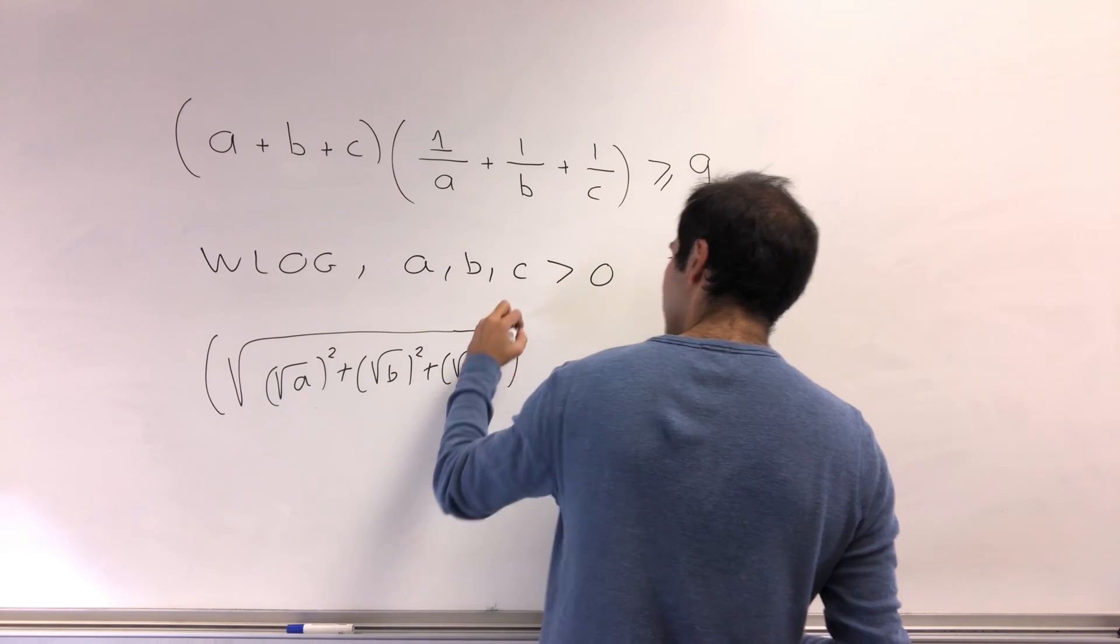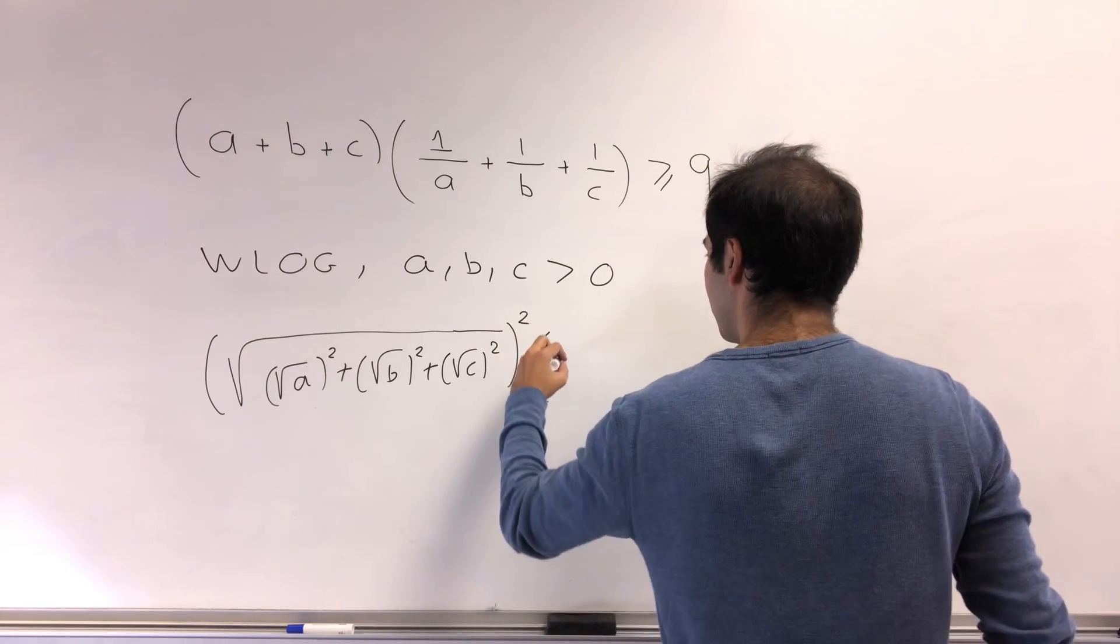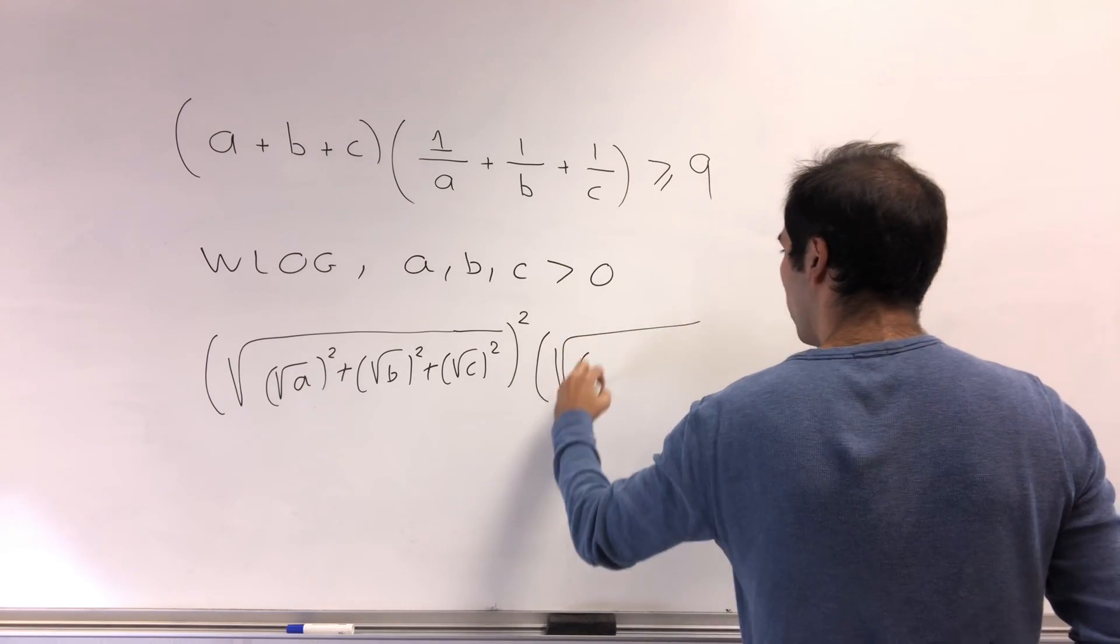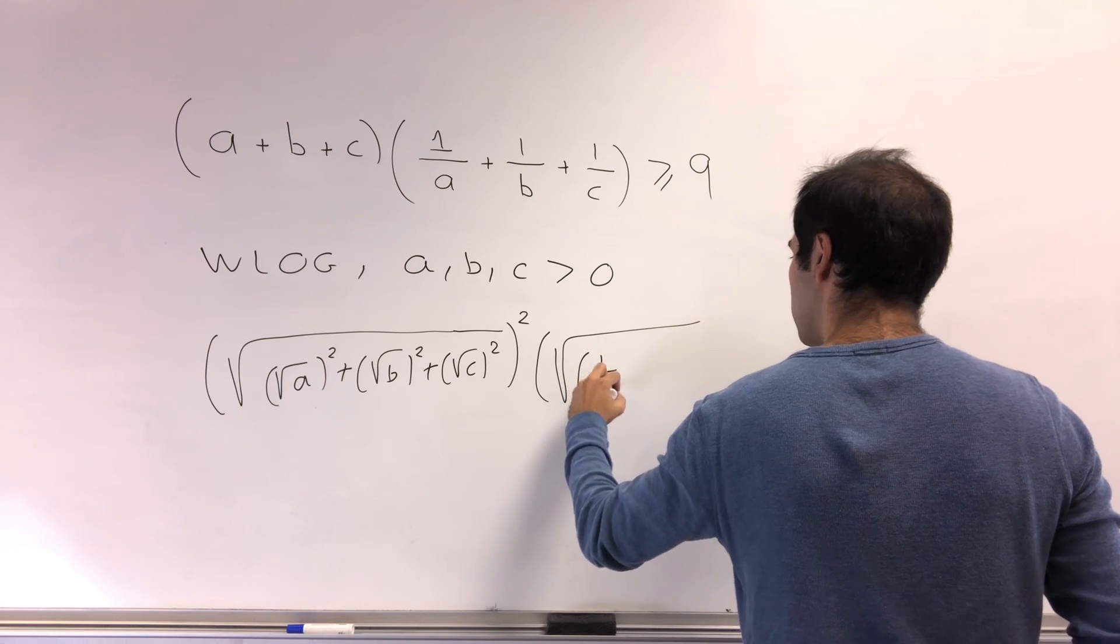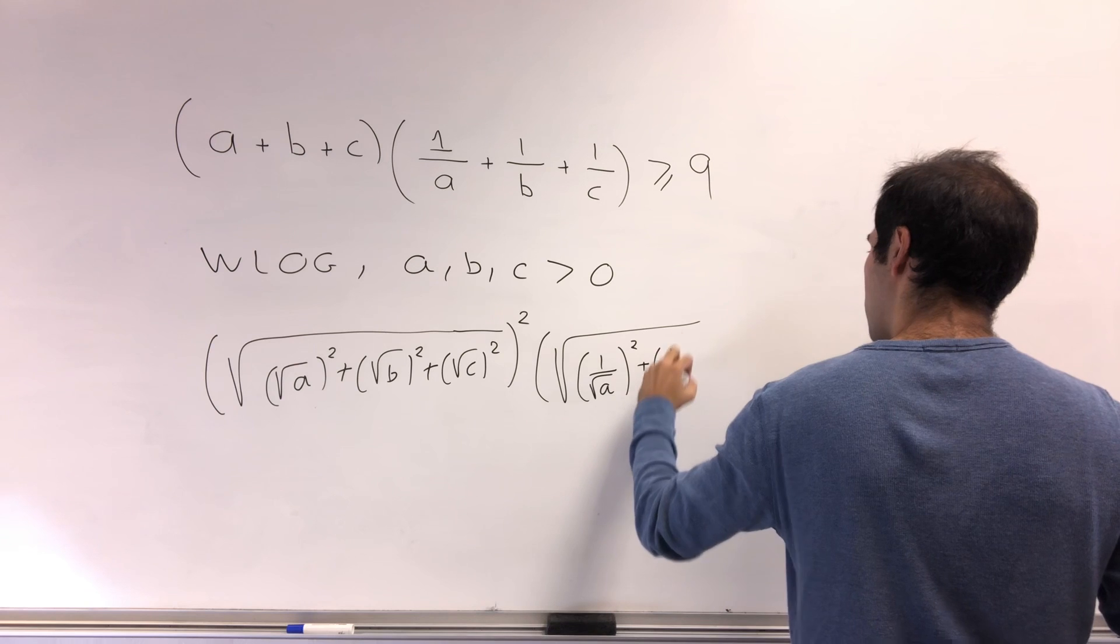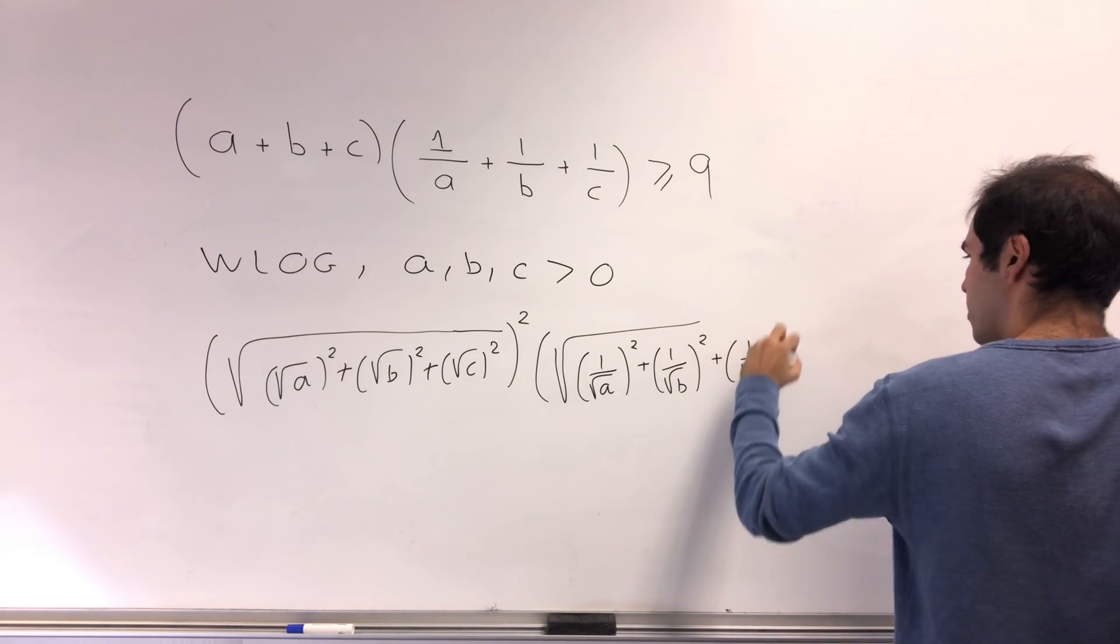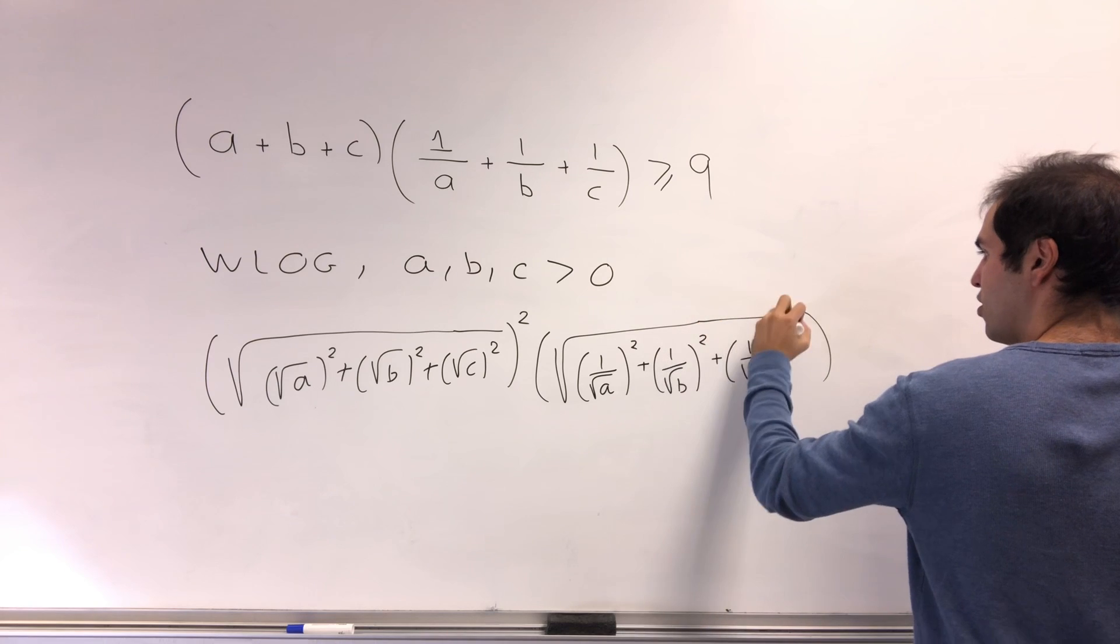And similarly here, that becomes (√(1/√a)² + √(1/√b)² + √(1/√c)²)². And you also square this.